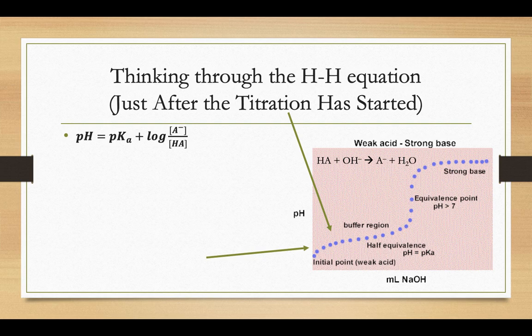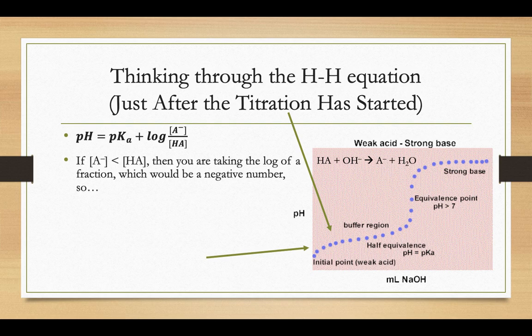So we've added a little bit of OH minus, but the OH minus is the limiting reactant. We do have some A minus that has formed, but not much because the A minus that's formed is based on your limiting reactant, which in that part of the graph is your hydroxide concentration. Then we haven't added much, so there's not going to be much A minus, but there's some.